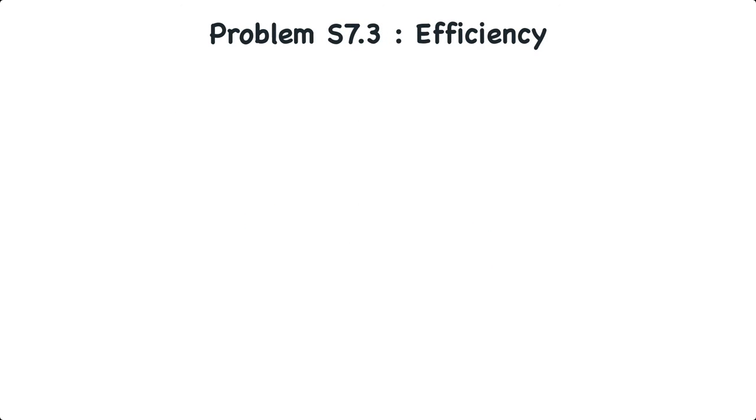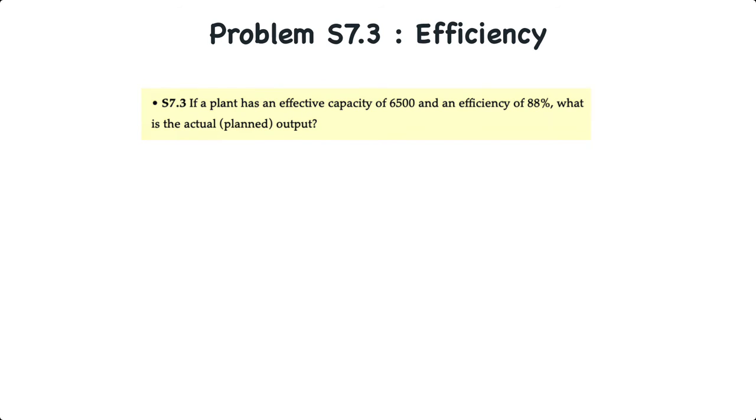Now for supplement problem 7.3. If the plant has an effective capacity of 6,500 hammers and an efficiency of 88%, what's the actual or planned output? Well, based on the problem we just did, efficiency is equal to actual or planned output divided by the effective capacity. In this case, we know the efficiency and the effective capacity. We need to figure out the planned output.